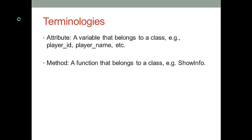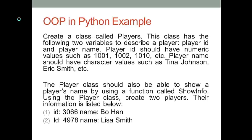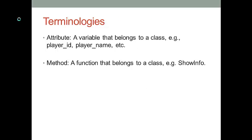In this case, we want to create two attributes: player_id and player_name. You can change the attribute names — for instance, player_ID or player_name are valid attribute names as well. Second: method. A function that belongs to a class is called a method. In the player class, we have one method called showInfo.